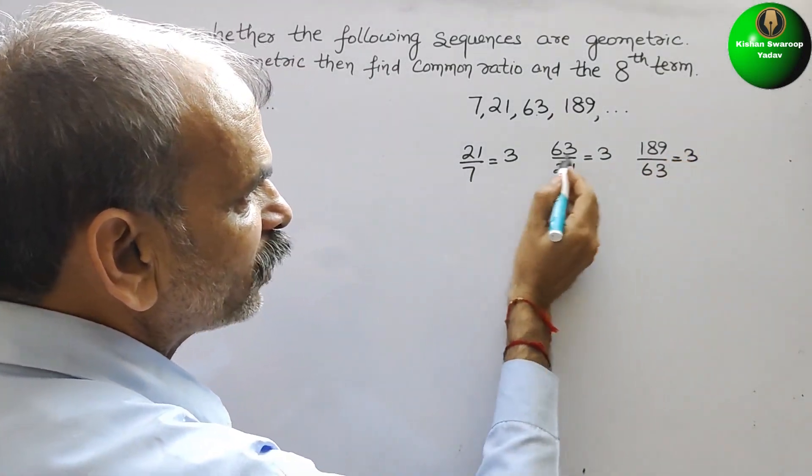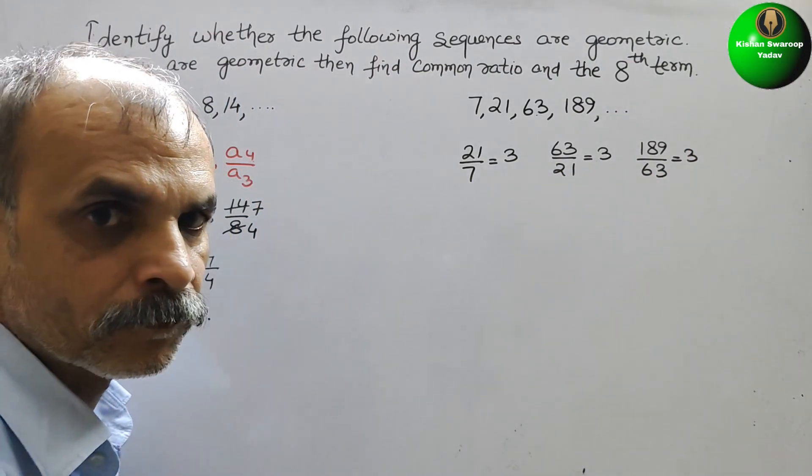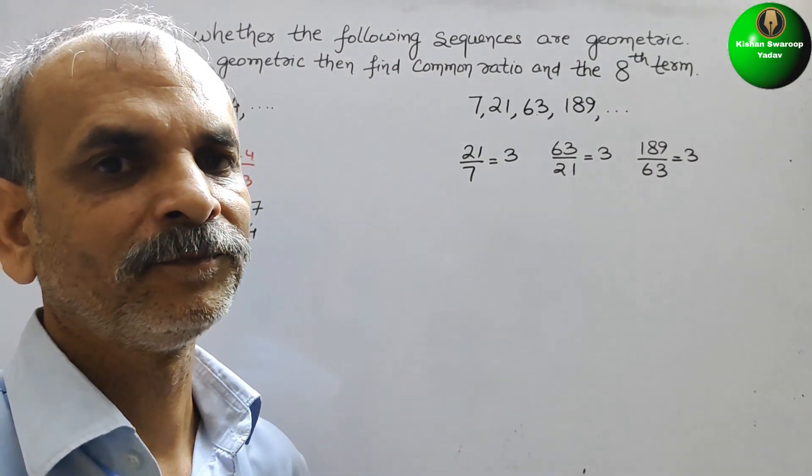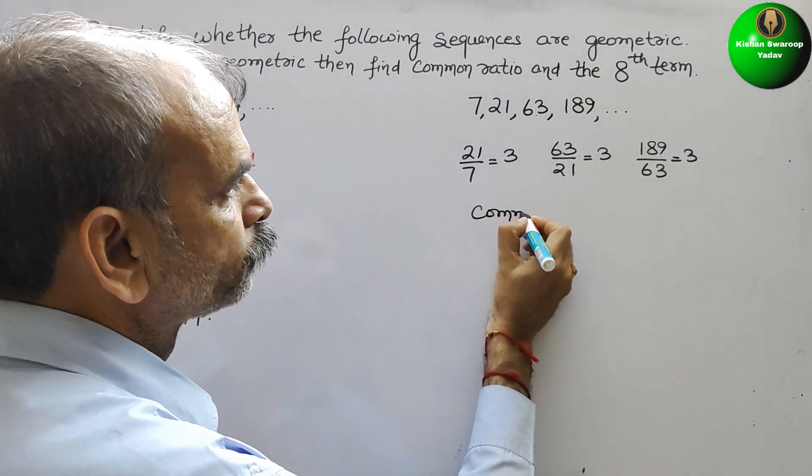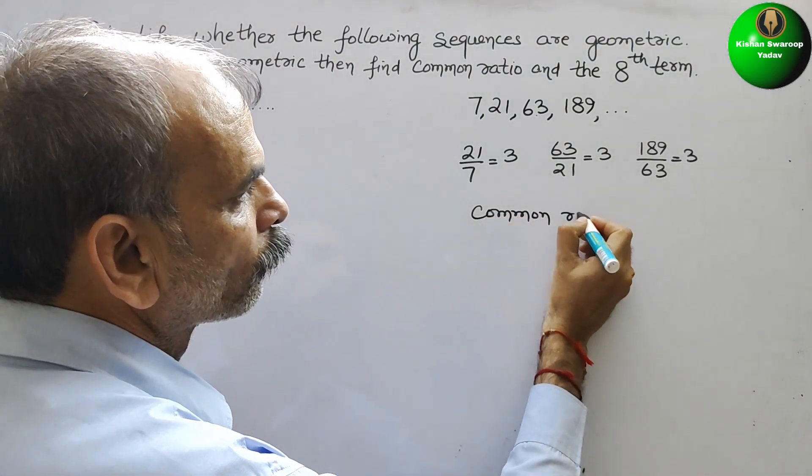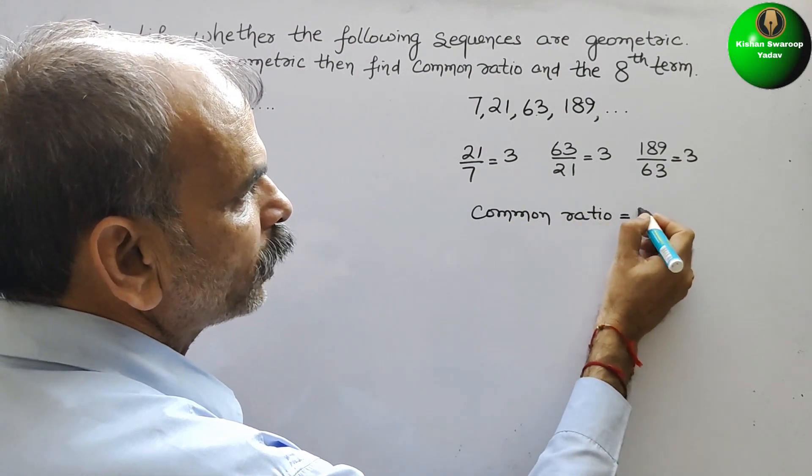So we can say 3 is common. Now the ratios are common. So we can say common ratio is equal to 3.